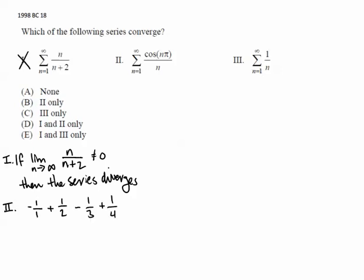And so we're going to end up with negative 1 over 1 plus 1 over 2 minus 1 over 3 plus 1 over 4. And we see here that this is the alternating harmonic series, and we know that that converges.